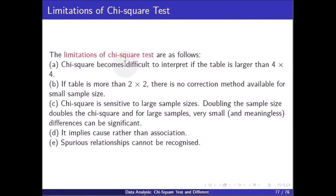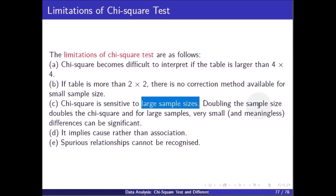The limitations of the chi-square test are as follows: it becomes difficult to interpret if the table size is larger than 4×4; if the table is more than 2×2, no correction method is available for small values; chi-square is sensitive to larger sample sizes — doubling the sample size doubles the chi-square; for larger samples, very small differences can be significant; and it implies cause rather than association, and spurious relationships cannot be recognized.